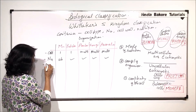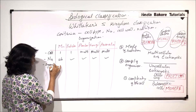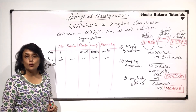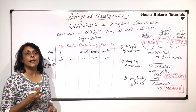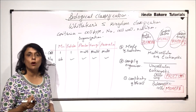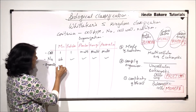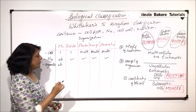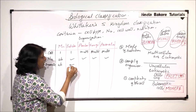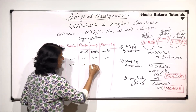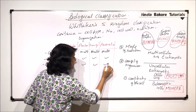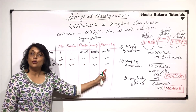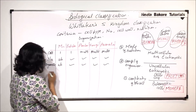Let us talk about organelles — all membrane-bound structures like mitochondria, endoplasmic reticulum, and Golgi apparatus. In Monera, all these structures are absent. In Protista, Plantae, Fungi, and Animalia, they are all present. This again confirms we are talking about eukaryotic cells for those four kingdoms.